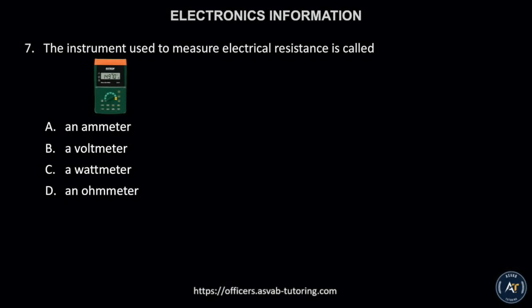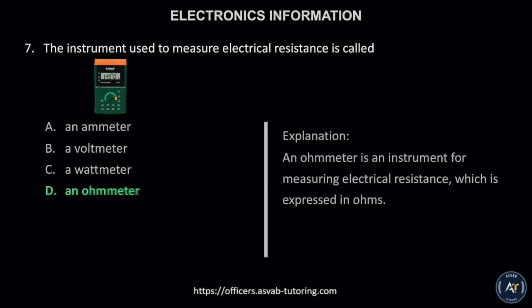Number 7. The instrument used to measure electrical resistance is called: A. An ammeter, B. A voltmeter, C. A wattmeter, or D. An ohmmeter. The correct answer is letter D, an ohmmeter. An ohmmeter is an instrument for measuring electrical resistance, which is expressed in ohms.